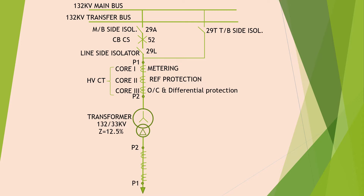These are the cores of the LV side CTs. P2 and P1 are the polarity of the primary side of the LV side CT. Core 1 is used for metering, core 2 is used for REF protection, and core 3 is used for overcurrent and differential protection.